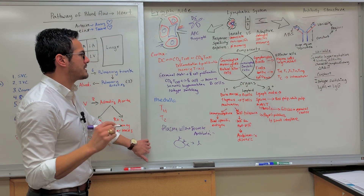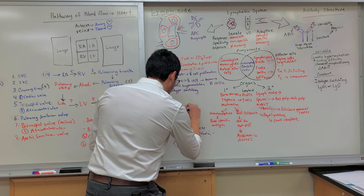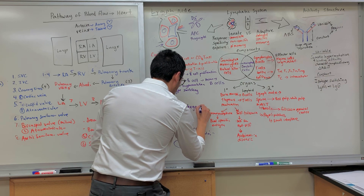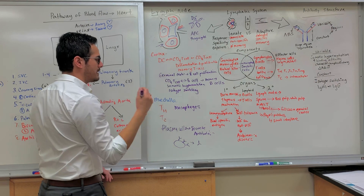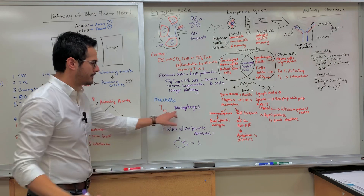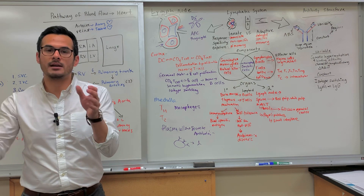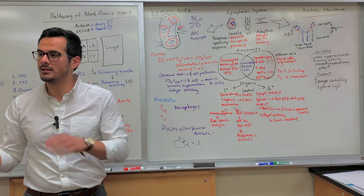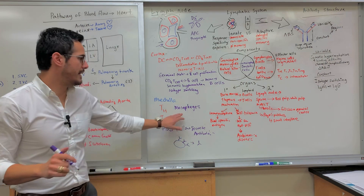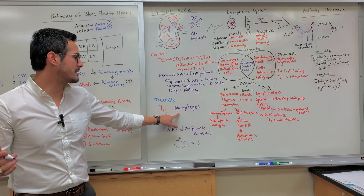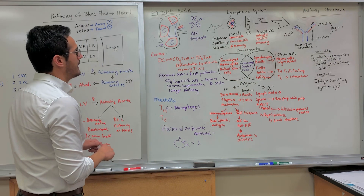One other thing to mention is macrophages. Macrophages are found within the majority of regions of the lymph node. They come from monocytes, which circulate in the blood and then differentiate into macrophages. They are phagocytes and can become activated by T helper cells.